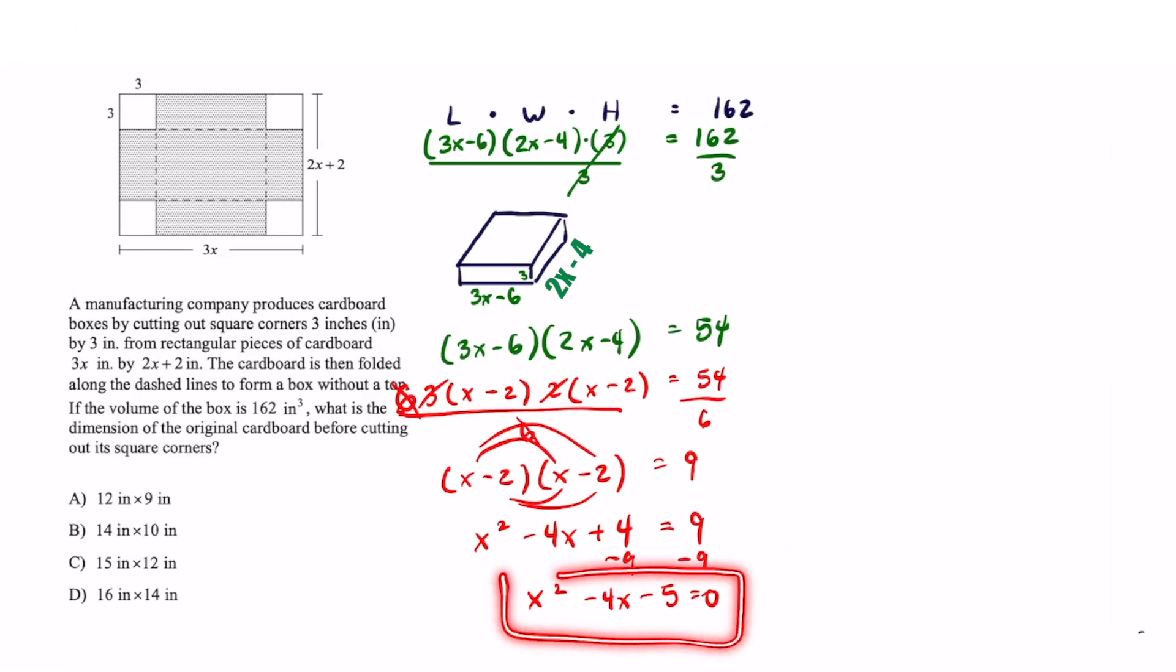Now I got to factor this out. I'm just going to write it right here because I ran out of space. Factoring that out that's going to factor into x minus 5 and x plus 1. And finding the zeros I will get x equals 5 and x equals negative 1.